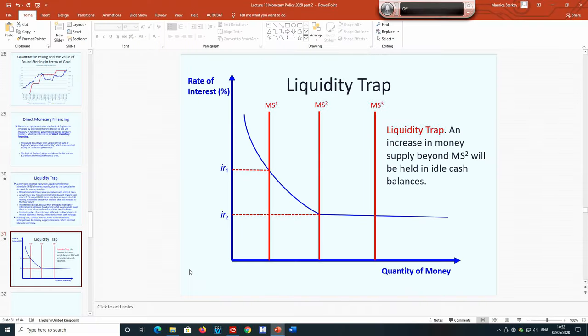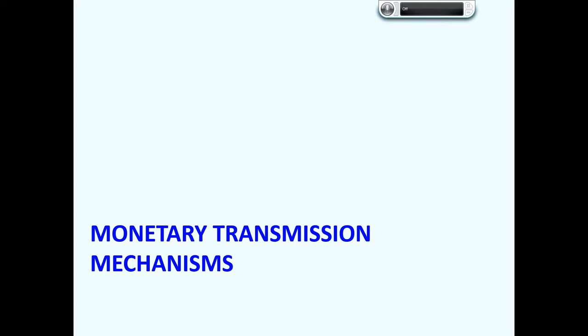This traditional representation of liquidity preference theory, with vertical money supply lines, suggests that the central bank has complete control of money supply. However, as seen in lecture nine, commercial private banks — because of their ability to create new deposits and new credit money — also have the ability to increase money supply. So the money supply lines presented on this diagram are not completely accurate representations of the factors that lead to increases in money supply in the real world.